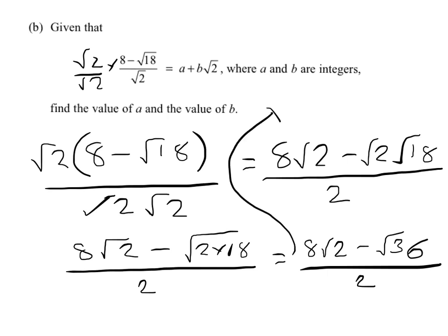So we've got 8 root 2 minus 6, all over 2. Now finally we can divide the 2 into the 8, giving 4 root 2, and the 2 into the 6, giving minus 3. That gets rid of the 2.